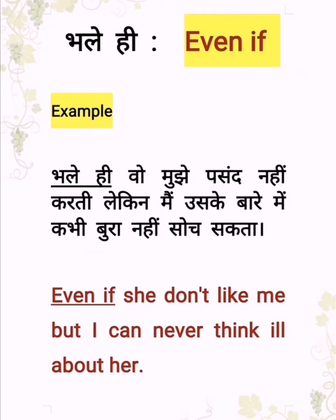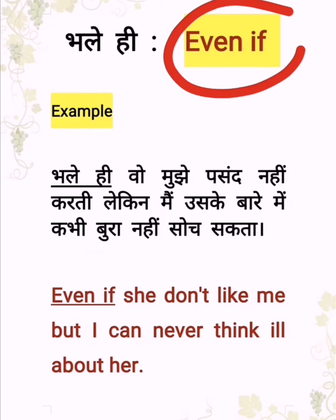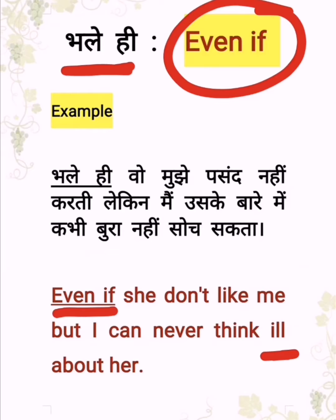Next is 'bhale hi' — in English this is 'even if.' For example: 'Bhale hi woh mujhe pasand nahi kerti, lekin mein uske baare me kabhi bura nahi soch sakta.' In English: 'Even if she doesn't like me, but I can never think ill about her.' Here 'ill' means bura (bad).